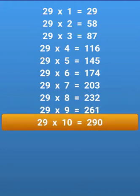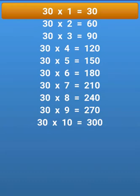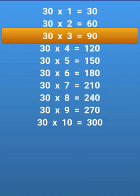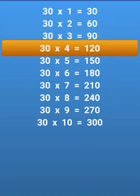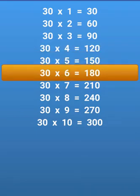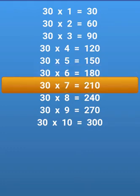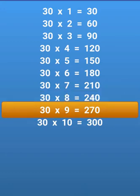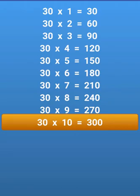30 times 1 equals 30, 30 times 2 equals 60, 30 times 3 equals 90, 30 times 4 equals 120, 30 times 5 equals 150, 30 times 6 equals 180, 30 times 7 equals 210, 30 times 8 equals 240, 30 times 9 equals 270, 30 times 10 equals 300.